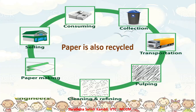The paper is carried to a big factory or company where it is recycled - it is pulped. Pulped means it is mixed with water and made into a pulp, a mixture which is cleaned, refined, and again paper is made. So we have completed a full circle - we started with paper making, then selling, consuming, collection, transportation, pulping, cleaning, and paper making again. This process can keep on continuing. This is what is called recyclable.